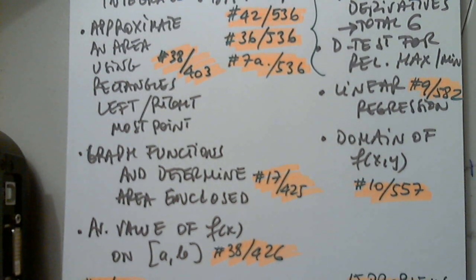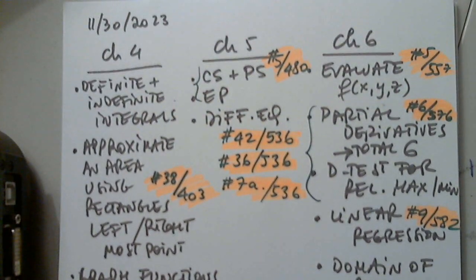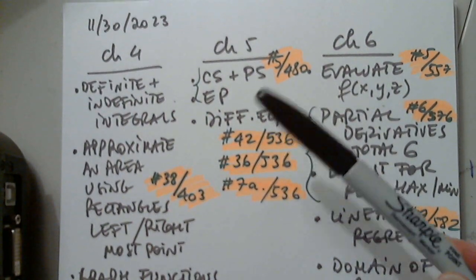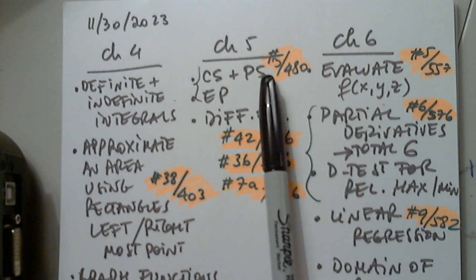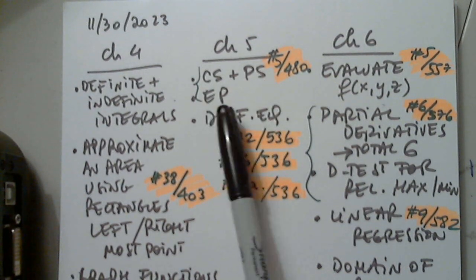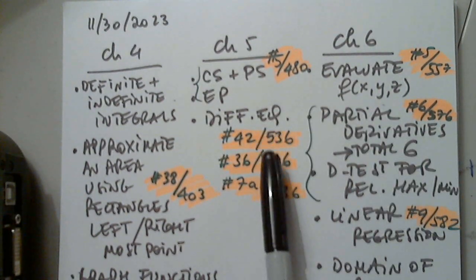The average value of a function, and these examples are for definite integrals. So seven problems for chapter four I selected. You can select others, of course. For chapter five, consumer surplus, producer surplus at the equilibrium point and some differential equations.